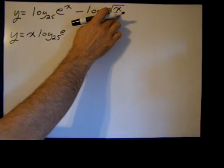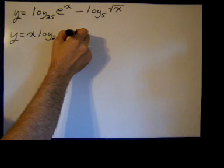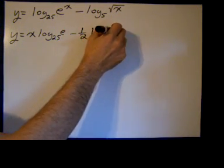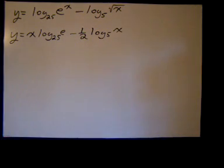We have an exponent on our argument of x as 1 half, so we can bring that down in front. We have the log base 5 of x, negative 1 half times the log base 5 of x.